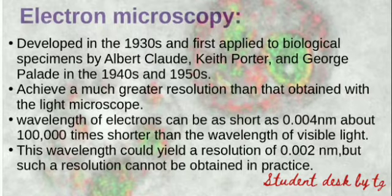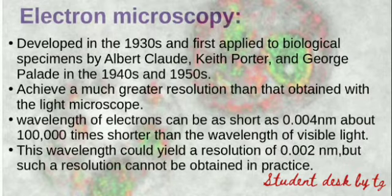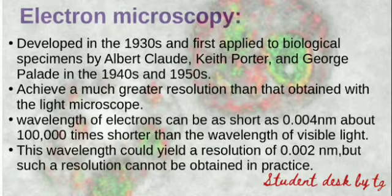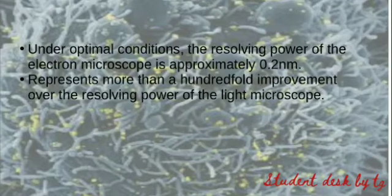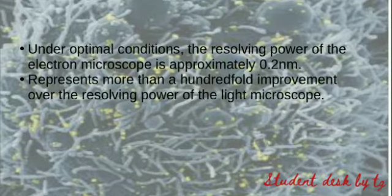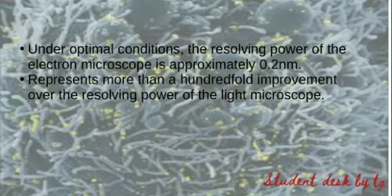In terms of resolution: light microscopy gives 0.2 micrometers. In practice, electron microscopy gives a resolution of 0.2 nanometers, and theoretically it can reach 0.02 nanometers. This represents a 100-fold improvement in resolving power compared to the light microscope.